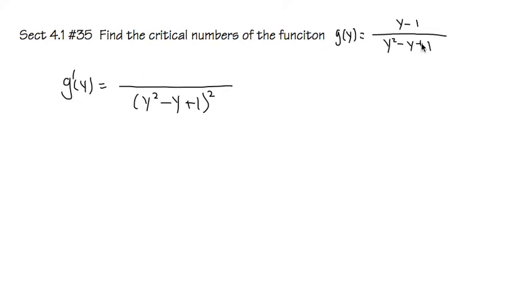And then for the numerator, you take the denominator first. So y²-y+1, and you multiply by the derivative of the top. The derivative of y-1 is just 1. And you subtract the top function, which is y-1, times the derivative of the bottom function.